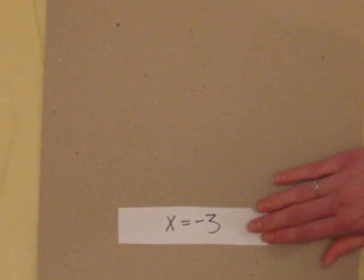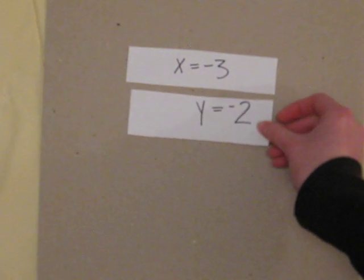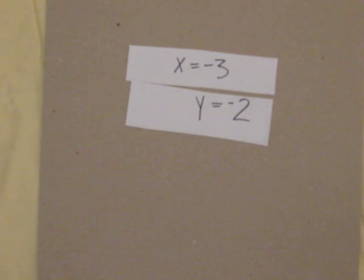So, by using Gaussian elimination, we found that x equals negative 3 and y equals negative 2.